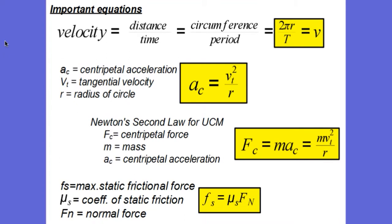Let's take a look at some of the important equations we're going to use in our study of uniform circular motion. The first one is the velocity of the object as it travels in a circle. We know that velocity is distance divided by time, so if we're moving in a circle, the distance around the circle is the circumference. The time it takes to go around the circle one time, by definition, is called the period. So if we take the circumference and divide it by the period, we get the tangential velocity in meters per second of the speed of the object as it moves in a circle.